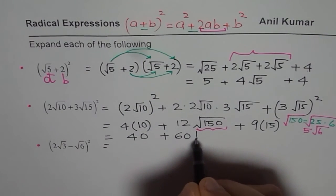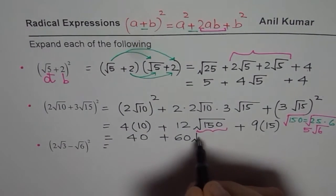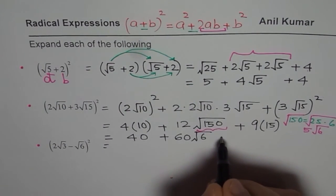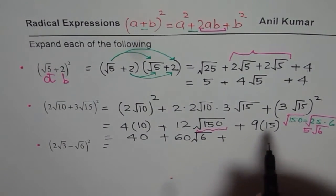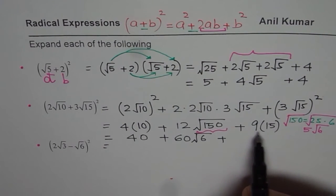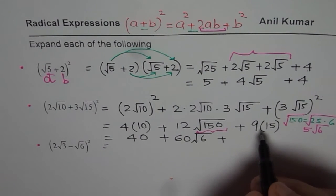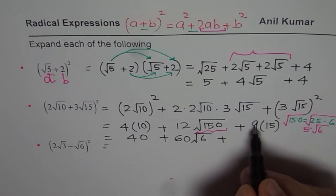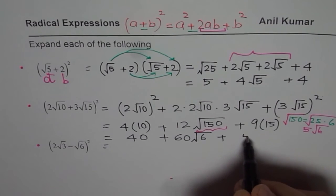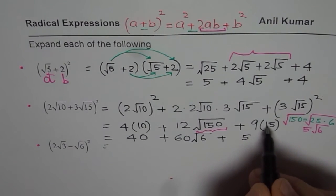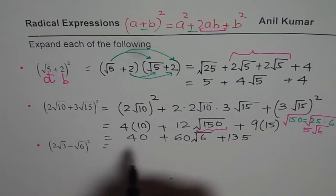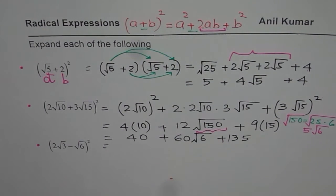Multiplying 5 by 12 gives 60, and then adding the constant terms: 4 × 10 = 40 and 9 × 15 = 135, giving 40 + 135 = 175. So the final answer is 175 + 60√6.